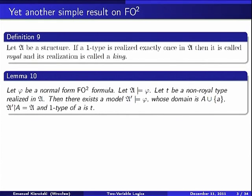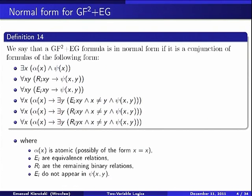Another simple result about two-variable logic which will be useful today: if we have an arbitrary model of a formula phi and we take an arbitrary non-royal one-type realized in this model, then we can add an additional copy of this one-type to the model. This is the second result from yesterday — a very simple observation, in fact.